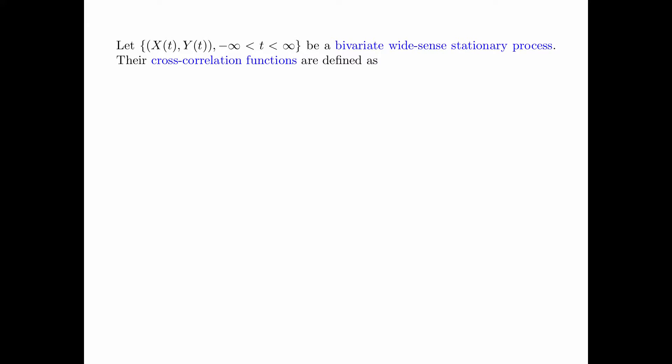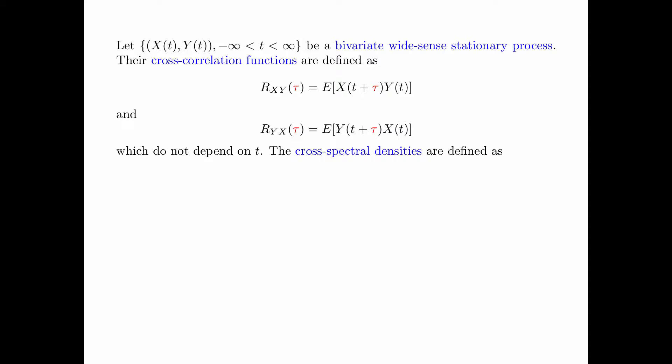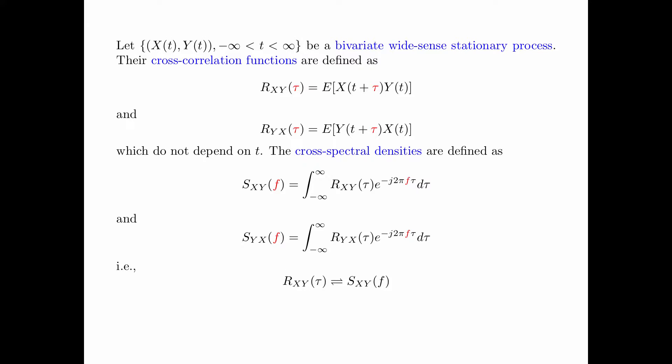Let x of t and y of t be a bivariate wide-sense stationary process. The cross-correlation functions are defined as r_xy of tau equals the expectation of x of t plus tau times y of t, and r_yx of tau equals the expectation of y of t plus tau times x of t. These quantities do not depend on t, and the cross-spectral densities are defined as their Fourier transforms — namely, s_xy of f is the Fourier transform of r_xy of tau, and s_yx of f is the Fourier transform of r_yx of tau.